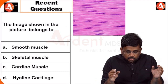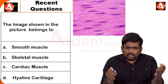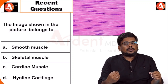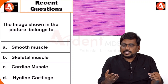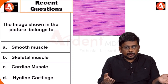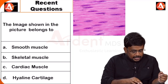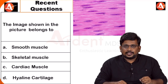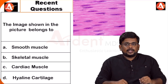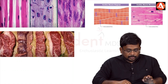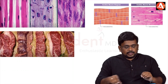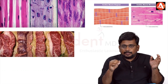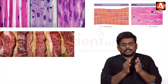The next question asks what type of muscle is shown in the image. When histology-based images of muscles are given, here are identification points. There are three muscle types: skeletal muscle, cardiac muscle, and smooth muscle.